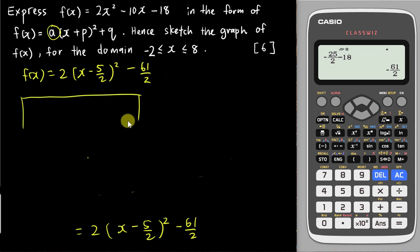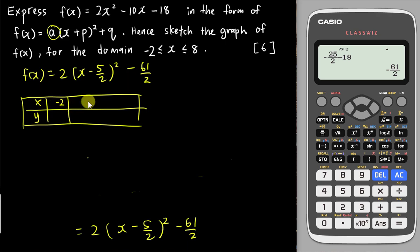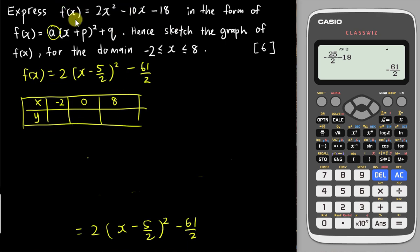To find the range from the domain, set up an x-value table with negative 2, 0, and 8 as inputs (noting y when x = 0 is the y-intercept). Substitute negative 2 into the original equation: 2(-2)² - 10(-2) - 18 to find the corresponding y value.